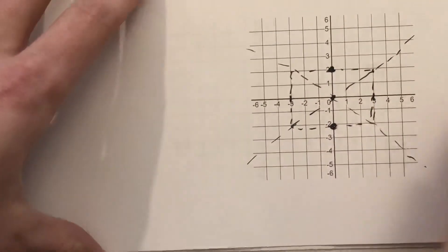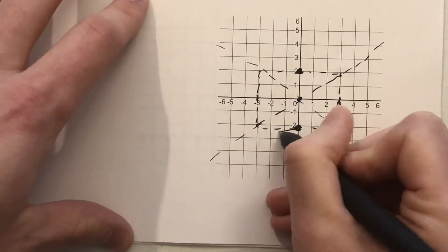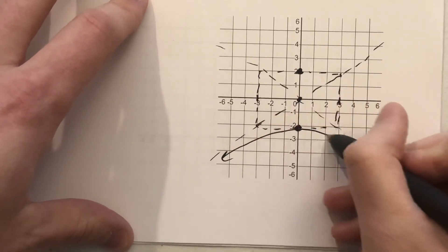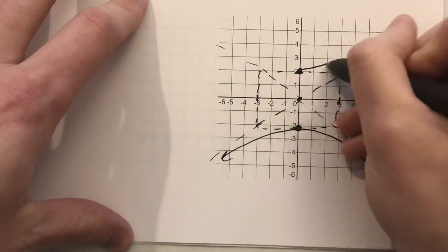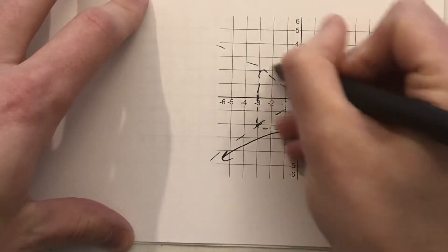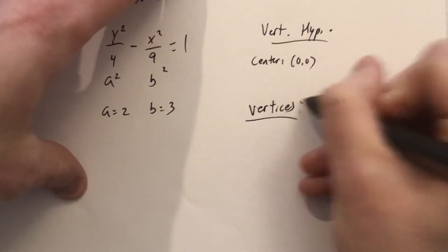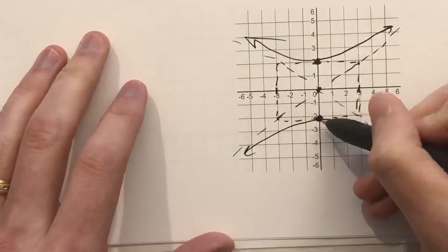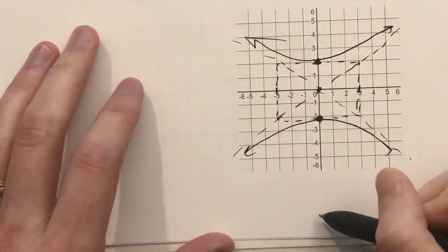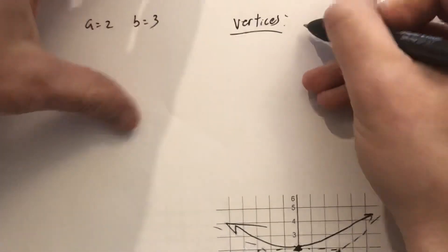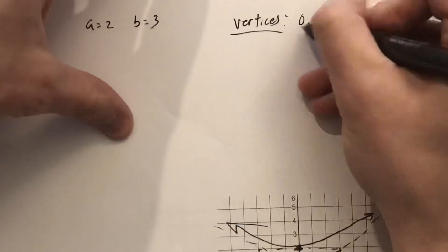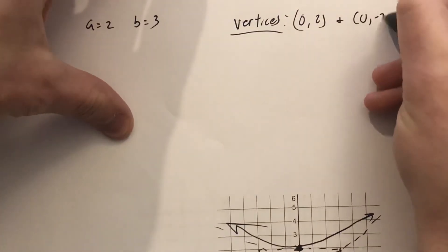And in fact, we've got all the information there, we can even draw that sketch in regards to the asymptoting happening as it goes left and right. So with that information, we can label our vertices. We know the vertices are those points the graph goes through on the transverse axis at 0, 2 and 0, negative 2.